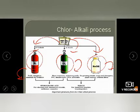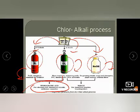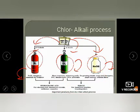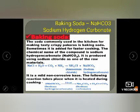NaOH is used for degreasing metals, making soap, detergents, paper, and artificial fiber. The combination of H₂ and Cl₂ is used for cleaning steel, ammonia chloride, and medicinal and cosmetic purposes. The combination of Cl₂ and NaOH is used for household bleaching and cleaning purposes.